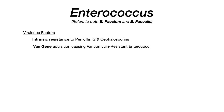Now let's talk about virulence factors. The first — less critical to memorize — is that enterococcal species have intrinsic resistance to penicillin G and cephalosporins, so we can't treat with those if the infection is caused by enterococcus faecium or faecalis. More importantly, the VAN gene is a gene acquired by the bacteria that confers vancomycin resistance, producing what's known as vancomycin-resistant enterococci, or VRE.